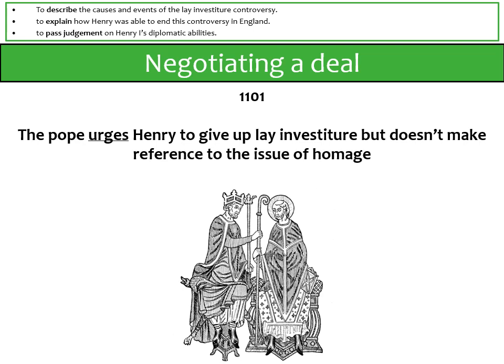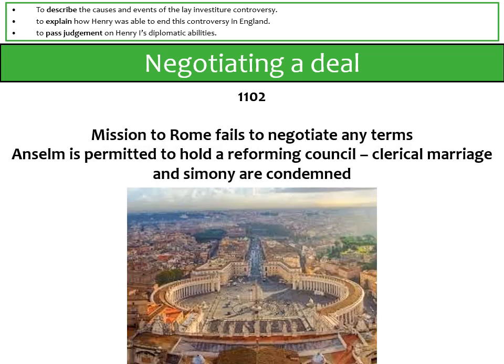Henry ignores this request and does nothing about it. In 1102 they decide to send a mission to Rome to negotiate a deal. For Henry the deal means no change to what's currently happening. Anselm is permitted to hold a reforming council as part of the arrangement, but there's no formal decision on lay investiture. Anselm's council was something he had hoped for since the reign of William II; in those councils, clerical marriage and simony are condemned — much like what Archbishop Lanfranc had done in his reforming councils.